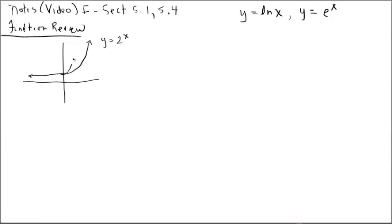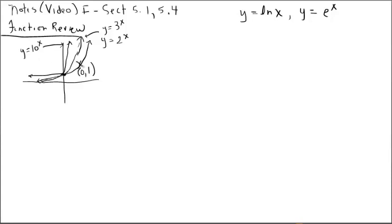Let's look at another exponential function: y equals 3 raised to the x power, and also y equals 10 to the x power. The larger our base becomes, the more vertically stretched the graph is. I want to point out this common point that they all pass through. The ordered pair (0, 1) belongs to all of these parent exponential functions, because anything to the 0 power is 1. So they all share the point (0, 1), and the base determines how stretched they are.